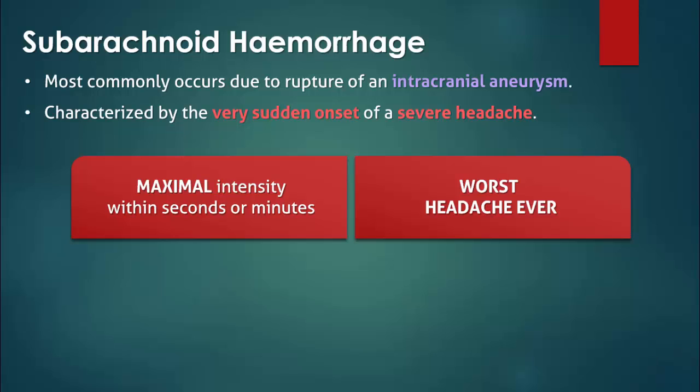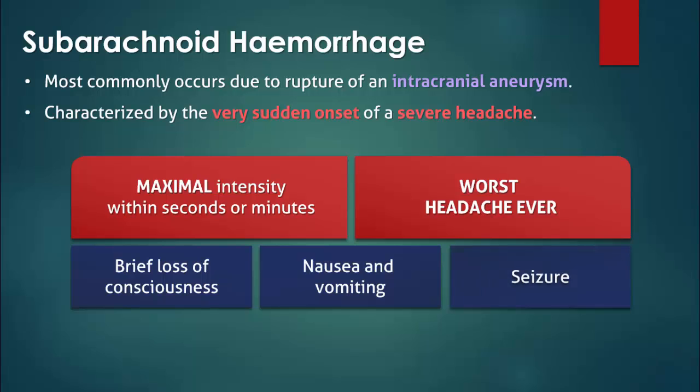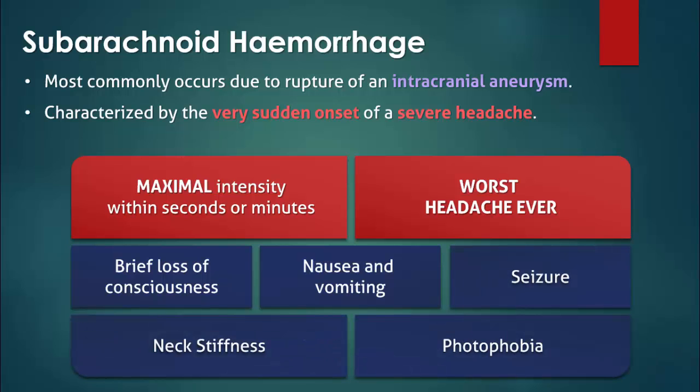The patients, however, may experience milder symptoms or simply describe their headache as being different than usual. Subarachnoid hemorrhage is also often associated with a brief loss of consciousness, nausea and vomiting, seizures, and photophobia and neck stiffness, both of which are signs of meningeal irritation.